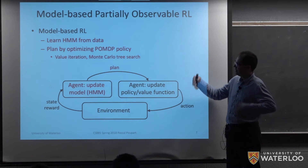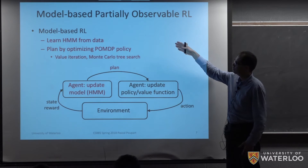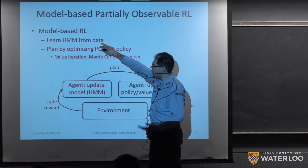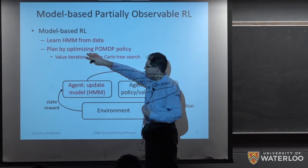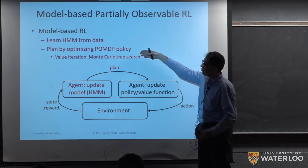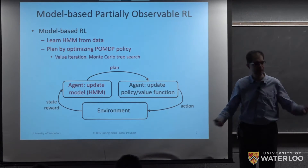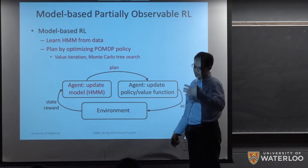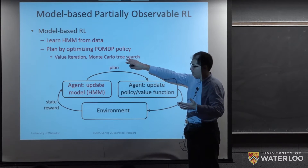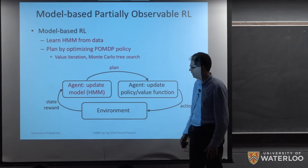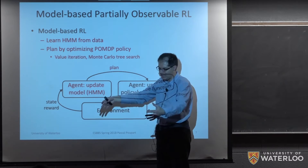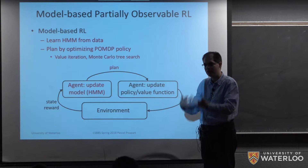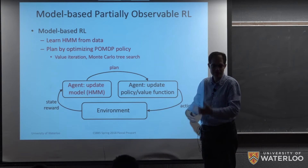Based on this, we can approach model-based partially observable reinforcement learning. In the model-based case, we could simply learn a hidden Markov model from data, and then start doing planning — optimizing a policy based on that hidden Markov model. Popular techniques include value iteration, and more specifically point-based value iteration. There are also policy search techniques. What has become quite popular in recent years is Monte Carlo Tree Search. Value iteration typically does planning with respect to everything, whereas Monte Carlo Tree Search does partial planning given your current state, so it's a lot cheaper and focuses on what matters in the short term.